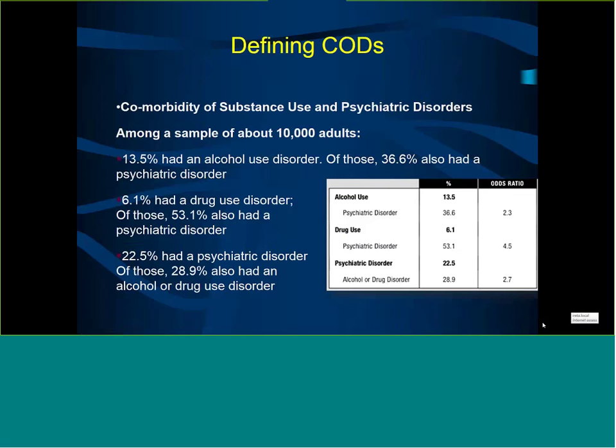Now, defining co-occurring disorders — a lot of the studies we have are really older epidemiological and clinical studies. One of the major studies done in this field looked at the co-morbidity of substance use and psychiatric disorders among a sample of about 10,000 adults. Among those, 13.5% had an alcohol use disorder, of whom 36.6% also had a psychiatric disorder — including depressive disorders, anxiety disorders, personality disorders, and psychotic disorders.